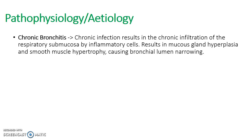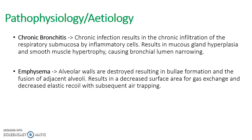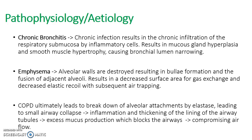Regarding pathophysiology: in chronic bronchitis, chronic infection leads to infiltration of the respiratory submucosa by inflammatory cells, resulting in mucus gland hyperplasia and smooth muscle hypertrophy, narrowing the bronchial lumen. In emphysema, alveolar walls are destroyed, leading to bullae formation and fusion of adjacent alveoli, causing decreased surface area for gas exchange and decreased elastic recoil with subsequent air trapping. Overall in COPD, elastase breaks down alveolar attachments, leading to small airway collapse, inflammation, thickening of airway tubule linings, and excess mucus production blocking the airways.